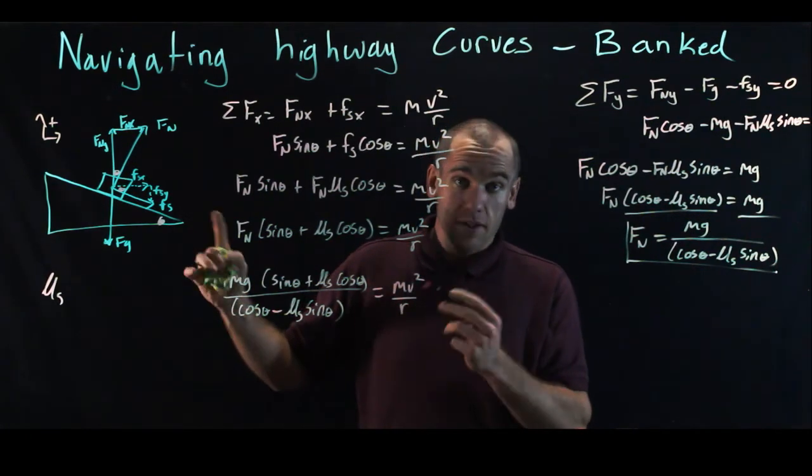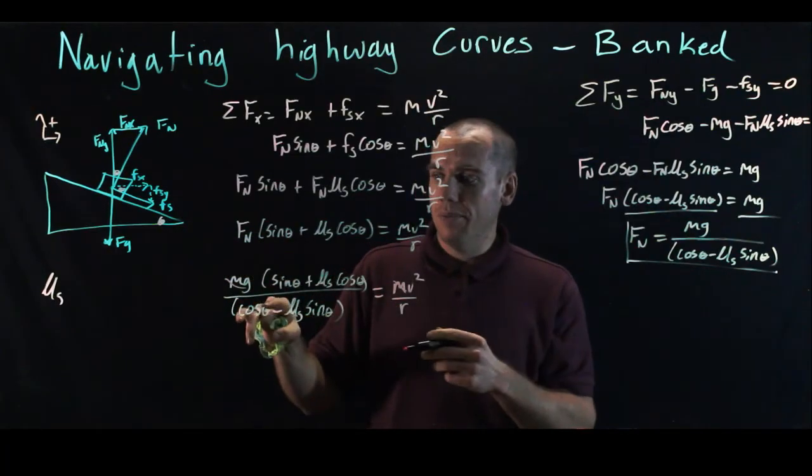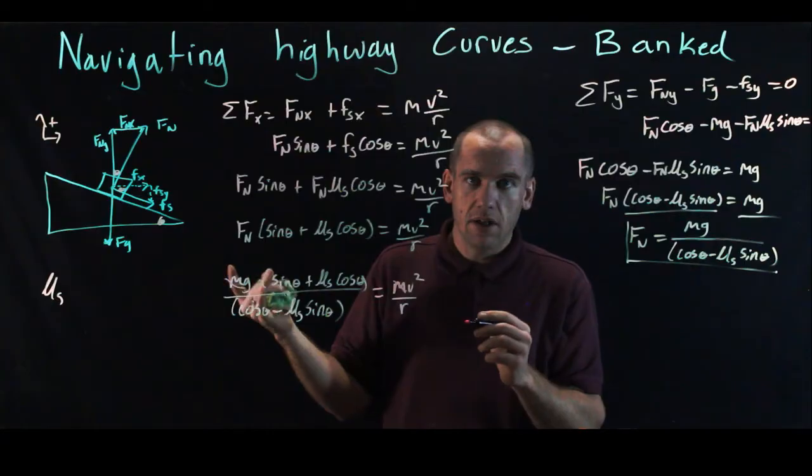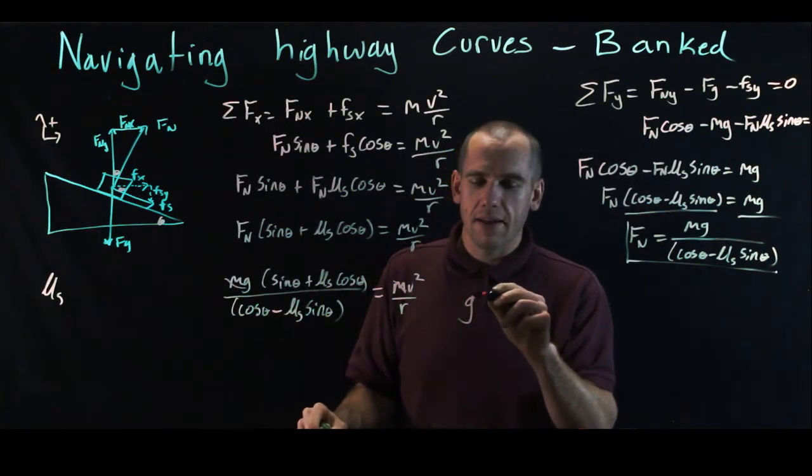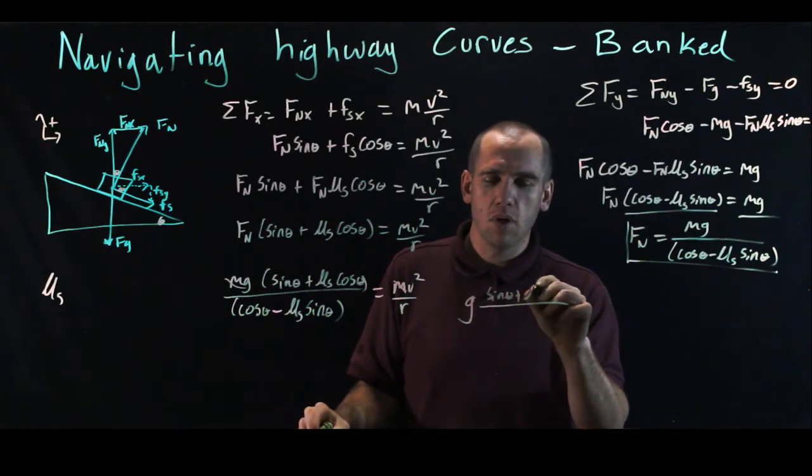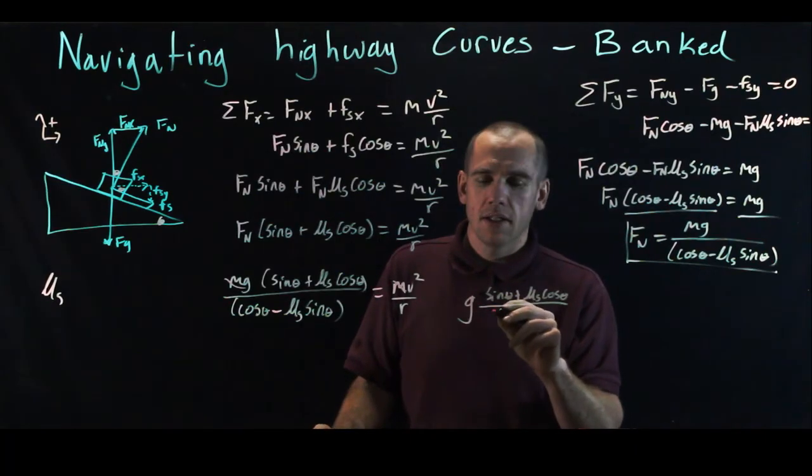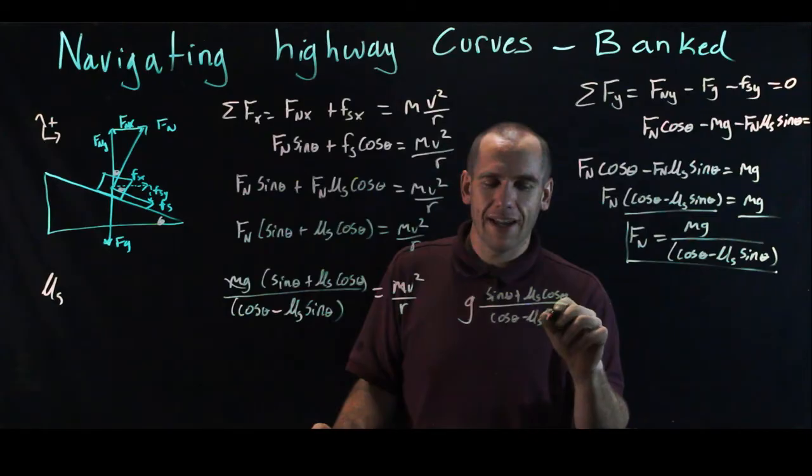m is on both sides, which is good because that's an unknown. It's gone. We've eliminated F_n and we've eliminated m and we've simplified this equation. And I know it doesn't look like it, but it is. It's simplified.